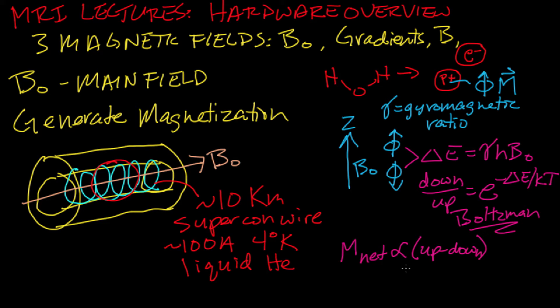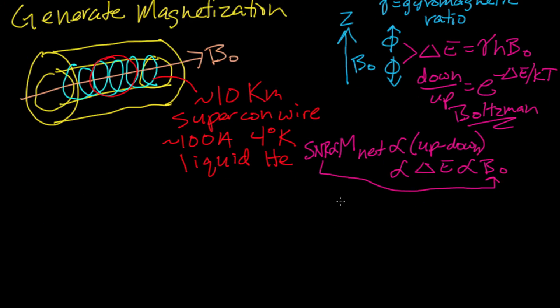Now, this Boltzmann distribution, when delta E is much smaller than KT as it is in this case, gives you a net magnetization that's proportional to delta E, that's in turn proportional to B0, and because the signal is proportional to the net magnetization, we can connect the signal to noise ratio directly to B0. Therefore, the bigger the B0, the better the SNR.